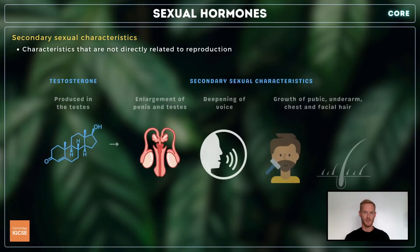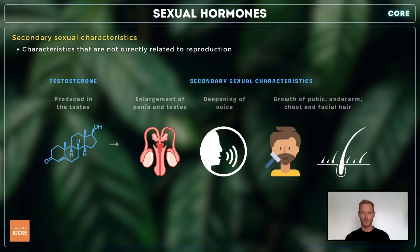Boys experience puberty around the same age as girls. During this time, the testes release a hormone called testosterone into the bloodstream. Testosterone induces the development of male secondary sexual characteristics, which include enlargement of the testes and penis, deepening of the voice, and the growth of pubic, underarm, chest, and facial hair.